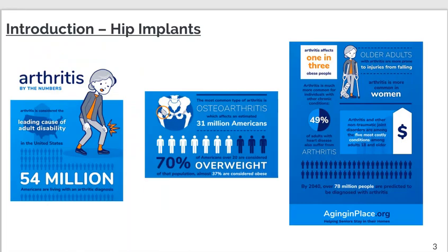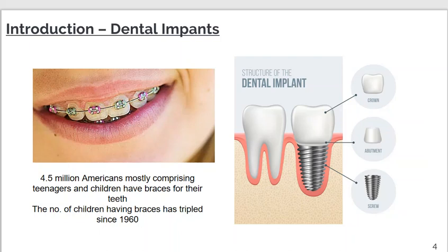These days arthritis is a very large problem. Over 54 million Americans are already living with arthritis, with numbers expected to increase to 78 million by 2040. Arthritis weakens the bone, requiring bone implants. Similarly, dental implants are widely used these days, and braces are very common with around 4.5 million Americans already using braces. All these implants and braces are generally made of stainless steel, ceramics, or titanium.